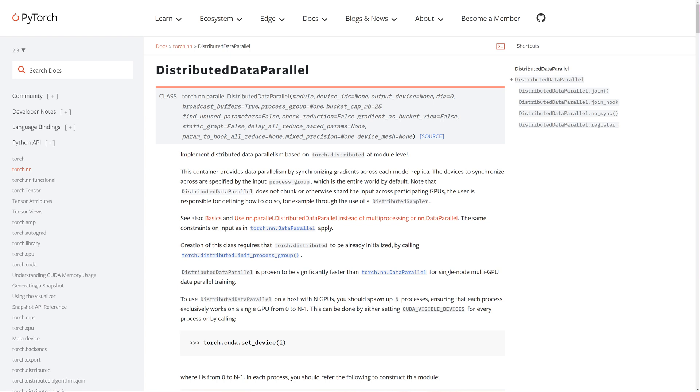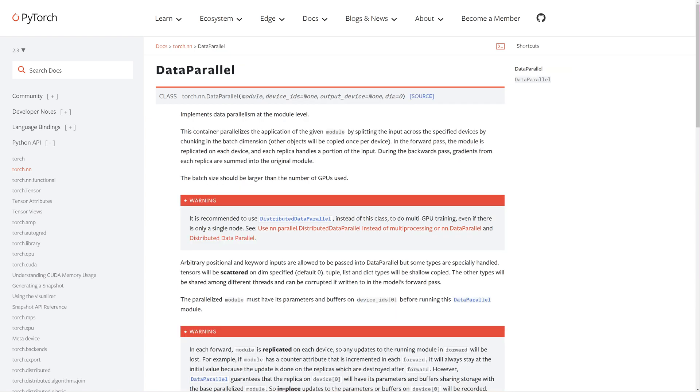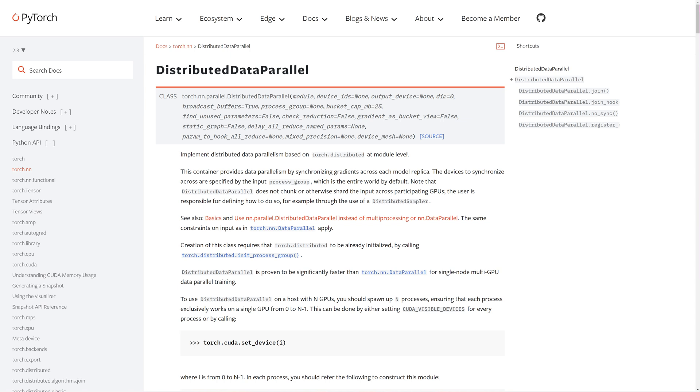If you look more into this on your own, you'll probably run into data parallel and distributed data parallel. DP, or data parallel, uses threads to manage multiple GPUs, making it only viable for one machine and is susceptible to slowdowns from Python's global interpreter locks. In contrast, DDP, or distributed data parallel, uses multi-process parallelism, allowing us to bypass the GIL and utilize multiple machines, each with multiple GPUs. Thankfully, DDP's speedups can still be enjoyed even on a single machine. If you have a second GPU lying around, you can easily put it to work with DDP.